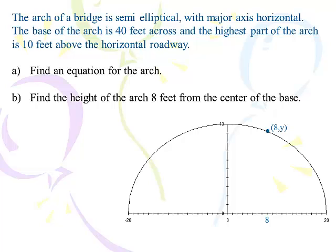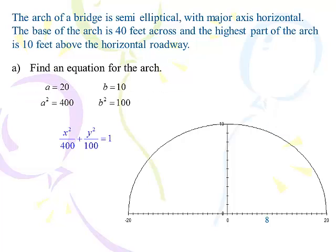Alright. Arch of a bridge is semi-elliptical with a major axis horizontal. The base of the arch is 40 feet across, and the highest point of the arch is 10 feet above the horizontal roadway. Two things. Find the equation of the arch, and find the height of the arch 8 feet from the center of the base. That's 8 feet to the right or 8 feet to the left. So we know it's 40 feet across. Your best bet on this one is to center it on the origin, so that it's 20 going to the right and 20 going to the left. And we know that it's 10 high at the highest point, which gives away b. So the a is 20, because it's 40 across, so it's 20 in each direction. And the b is 10, because it's 10 high. And so a squared is 400, and b squared is 100. So this is the basic equation.